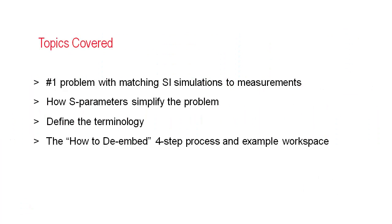This video will look at the number one problem with matching simulations to measurements when transmitting multi-gigabit signals through a printed circuit board physical layer. It will cover the S-parameter tools and terminology that are used to solve this problem, and then a simple four-step process will be demonstrated to enable a methodical approach to matching simulation with measurement, even at high data rates like 32 gigabits per second.